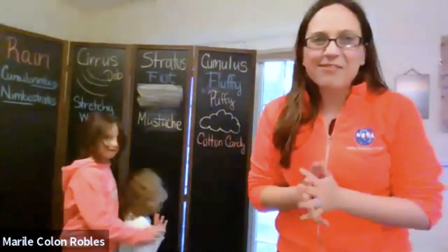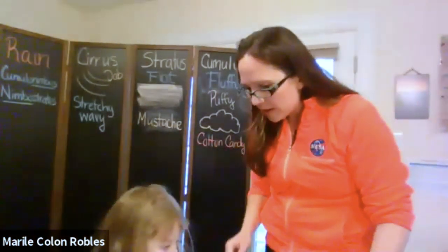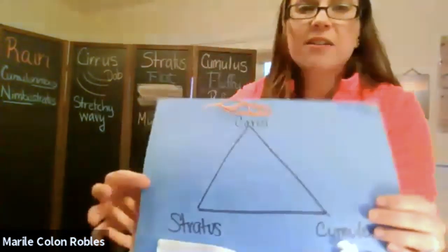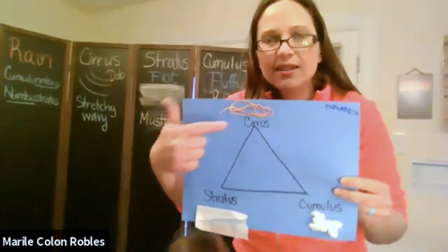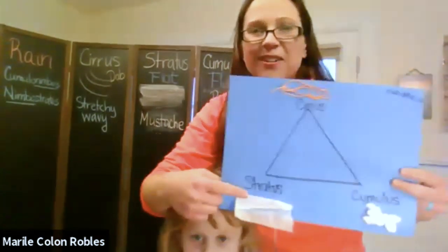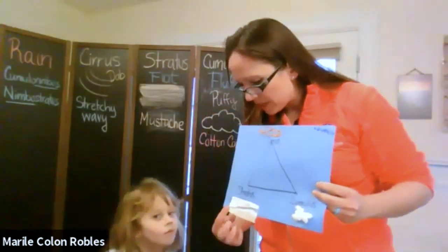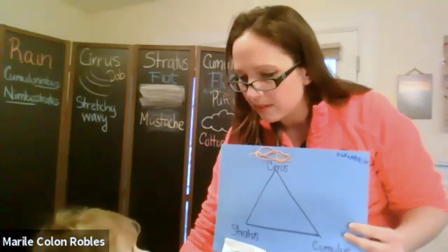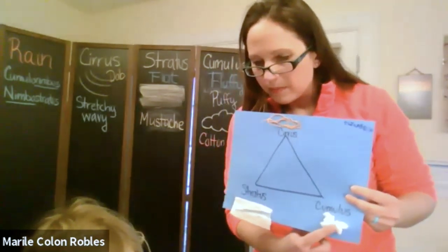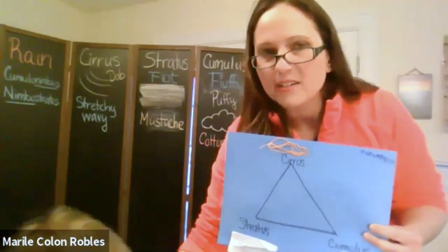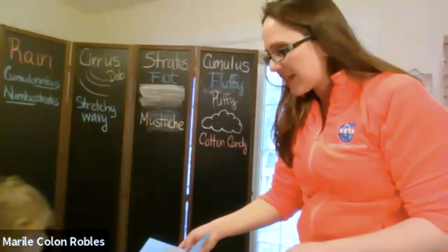Now we're going to share some neat activities. We looked for materials around the house and made this poster. I wrote the words — cirrus clouds are high clouds, and stratus and cumulus are low clouds, but they're flat and puffy. Elizabeth, what material did you use for the stratus cloud? Tissue paper. And what did we use for cumulus? Cotton balls. And how about for cirrus? String. Very good — and she wrote her name on it too.